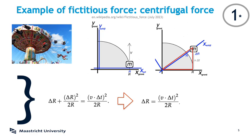If throwing away delta r squared bothers you, note that the only thing we are doing is taking the limit, and that's okay because in a moment we're going to take a derivative — two actually — with respect to time to find the acceleration. By definition, a derivative means that we take all distances and amounts of time to be very small indeed. But if you're still bothered by this, inside video one I do the derivation without such shenanigans — we get the same answer with completely correct mathematics.